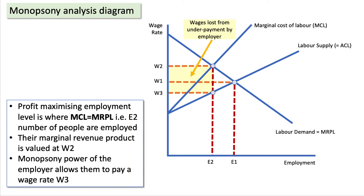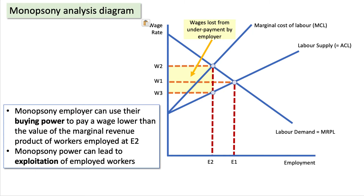The profit-maximising employment level is where marginal cost of labour intersects with marginal revenue product of labour — that's employment level E2. At that level, the value of marginal revenue product created is W2. However, the monopsony employer only uses the labour supply curve to determine the wage they pay, which is W3 — well below W2. So the monopsony employer uses their buying power to pay a wage lower than marginal revenue product, creating an exploitation of workers.